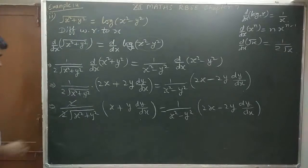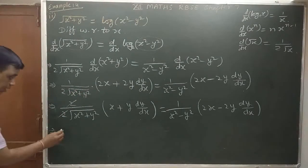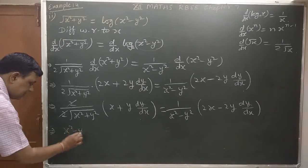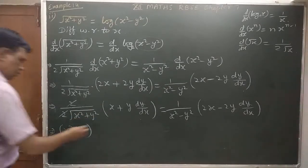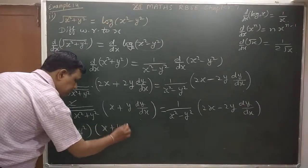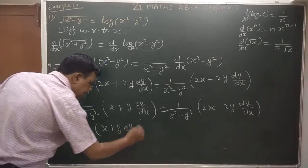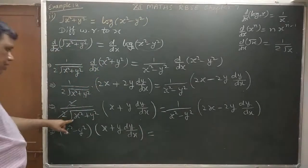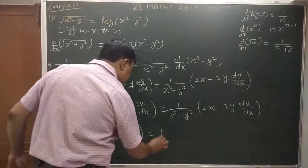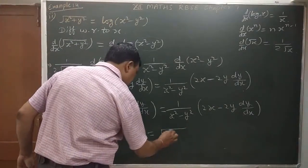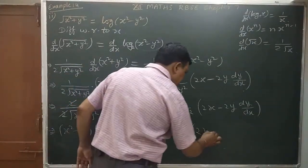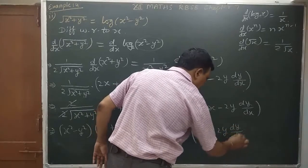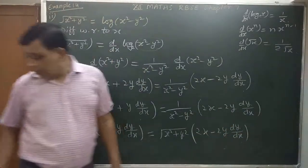After cross multiplication: (x² - y²) times (x + y dy/dx) is equal to (x² + y²) times (2x - 2y dy/dx). Now this bracket opens accordingly.